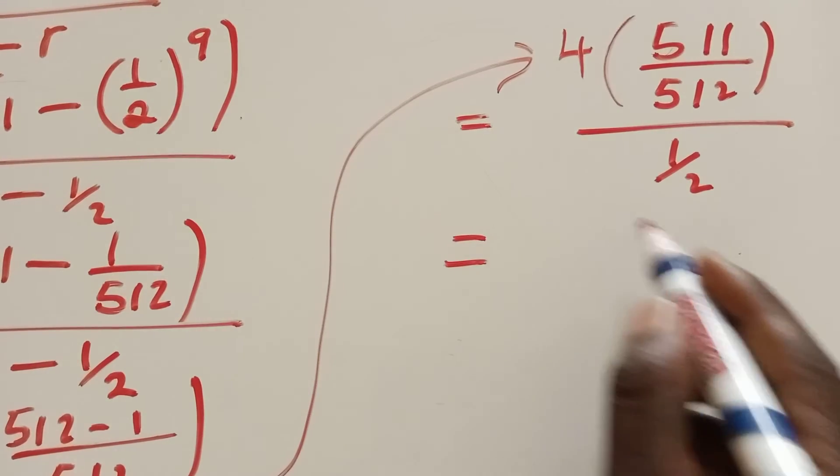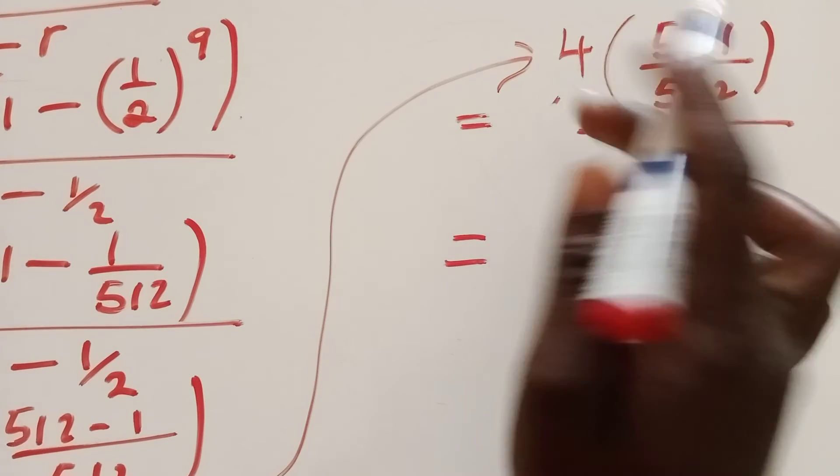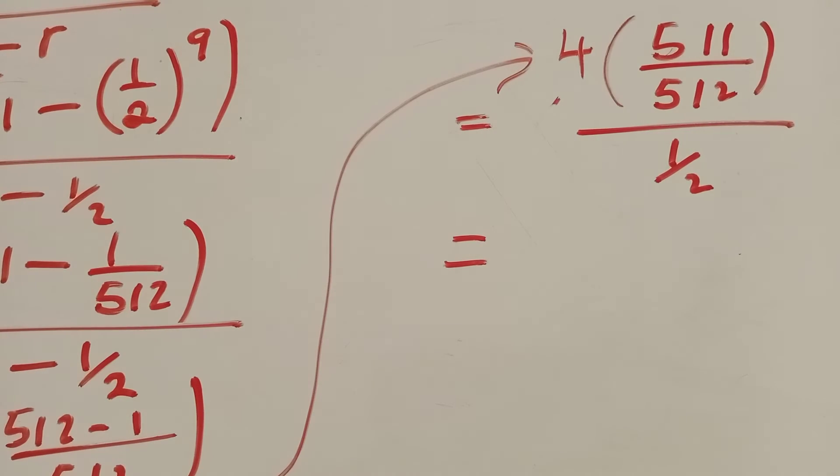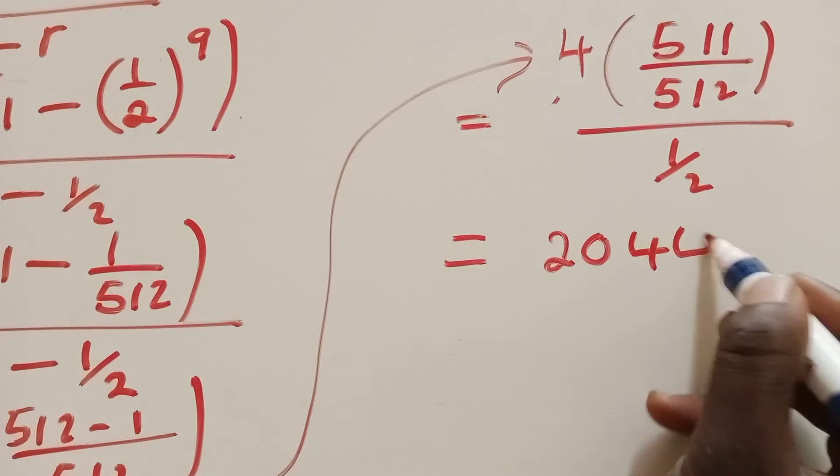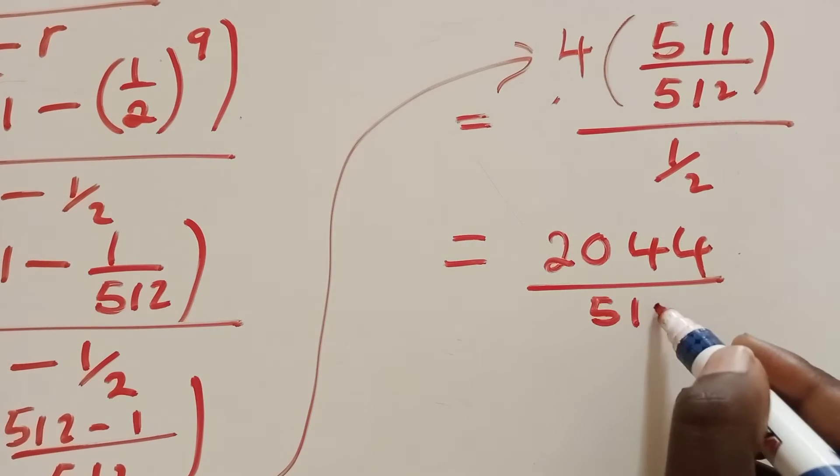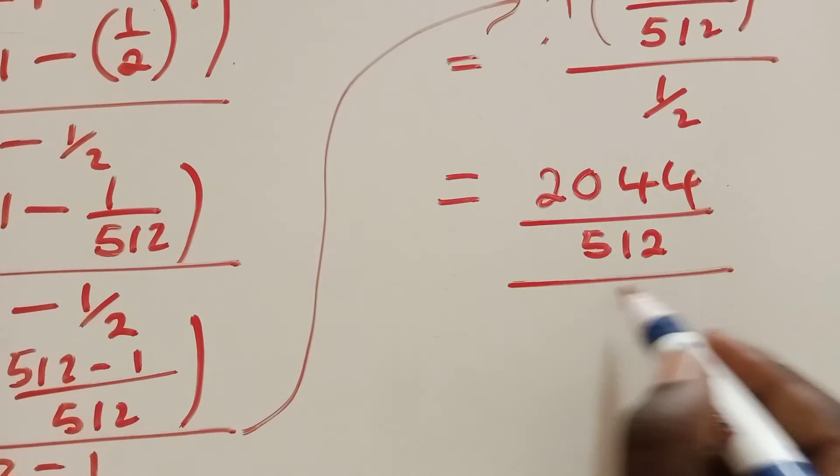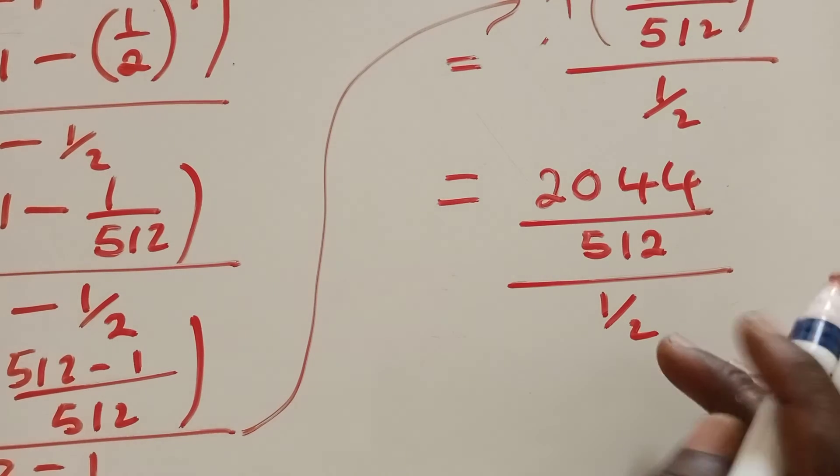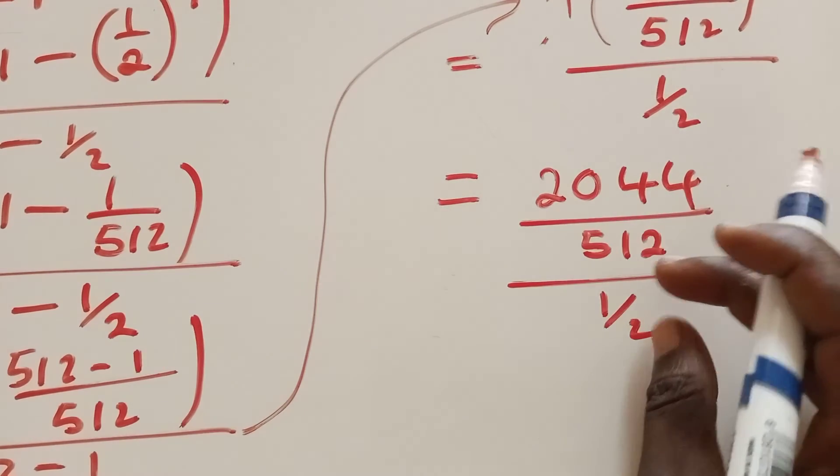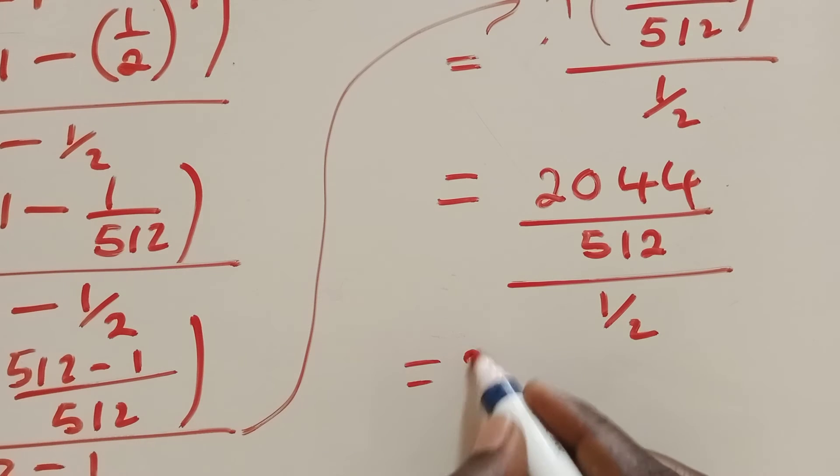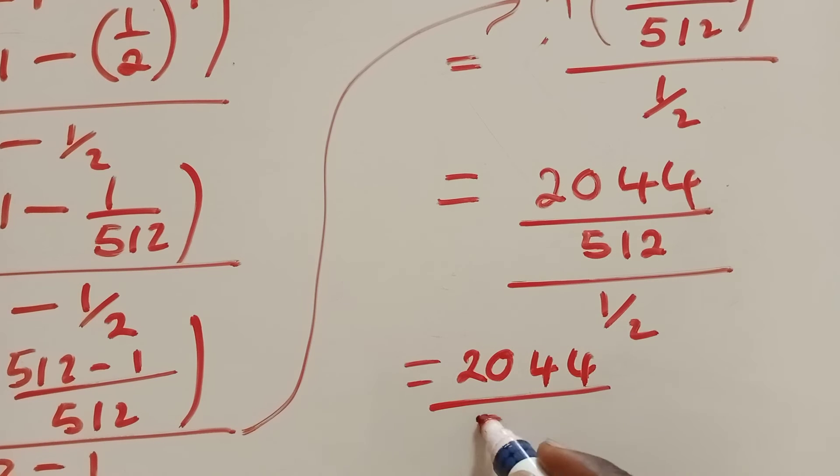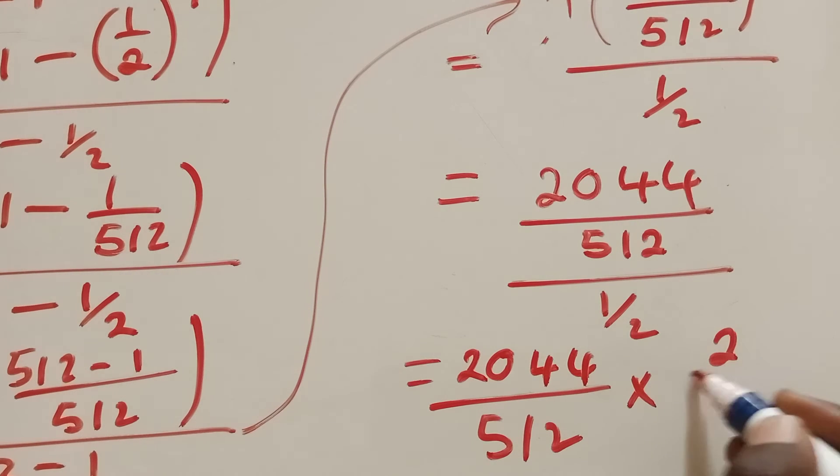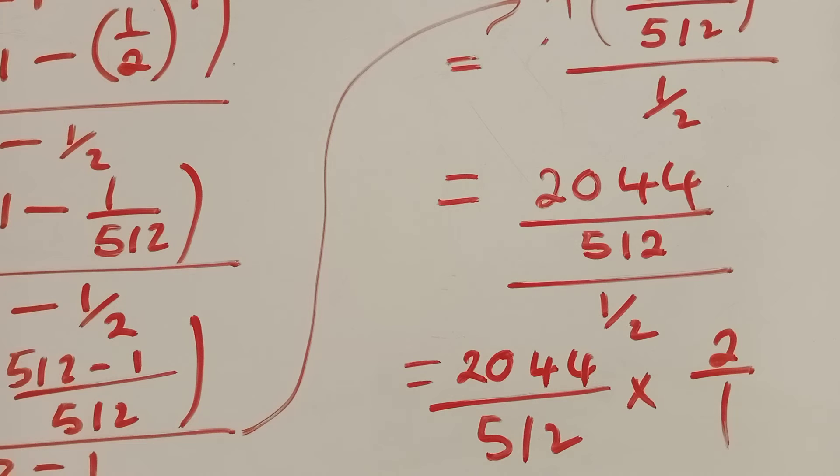We can continue. Here we distribute this, so we say 4 times 511. It's giving us 2044 over 512. Here we have 1 over 2, of which when dividing fractions, this will reciprocate, so it will look like this: 2044 over 512 times 2 over 1.